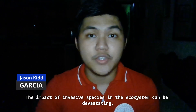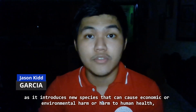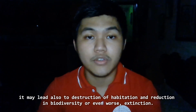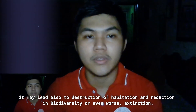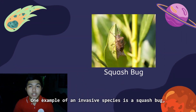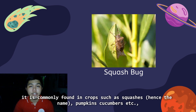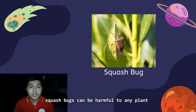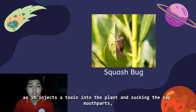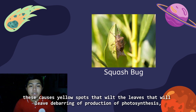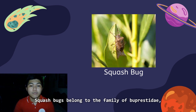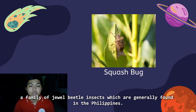The impact of invasive species in the ecosystem can be devastating, as it introduces new species that can cause economic or environmental harm, or harm to human health. It may also lead to the destruction of habitats, reduction in biodiversity, or even extinction. One example of an invasive species is the squash bug. It is commonly found in crops such as squashes, pumpkins, and cucumbers. Squash bugs can be harmful to any plant as they inject a toxin and suck the sap from the plant, causing yellow spots that wilt leaves and barring photosynthesis. They sometimes leave ragged holes when infestations are large, and belong to the family Buprestidae, jewel beetle insects generally found in the Philippines.